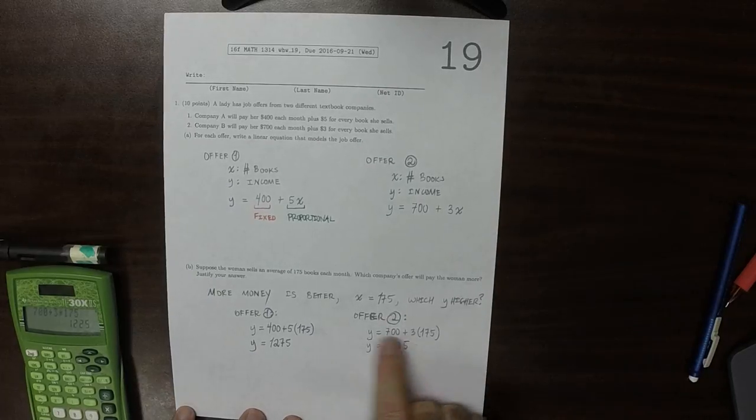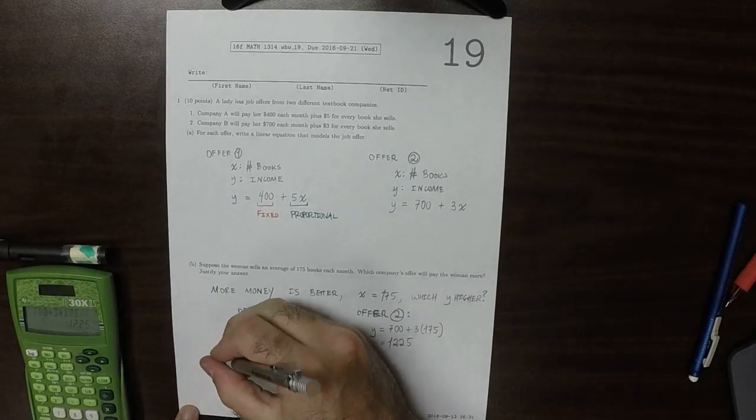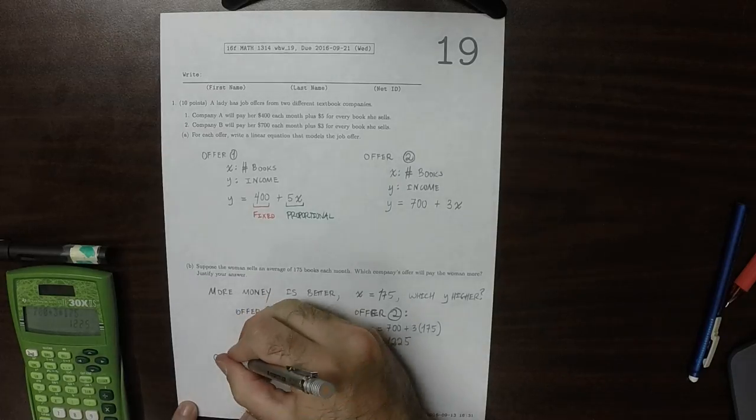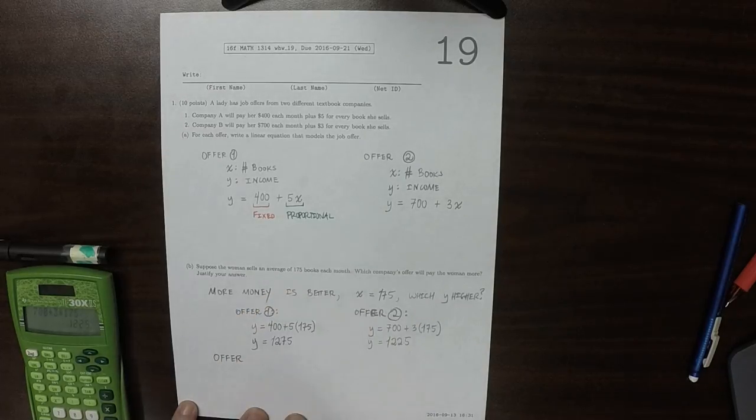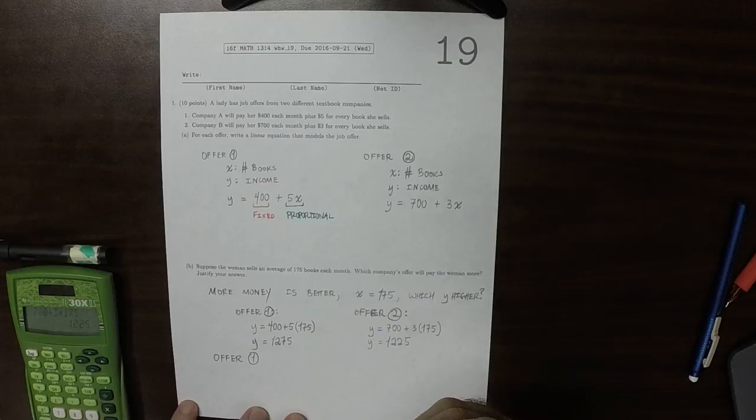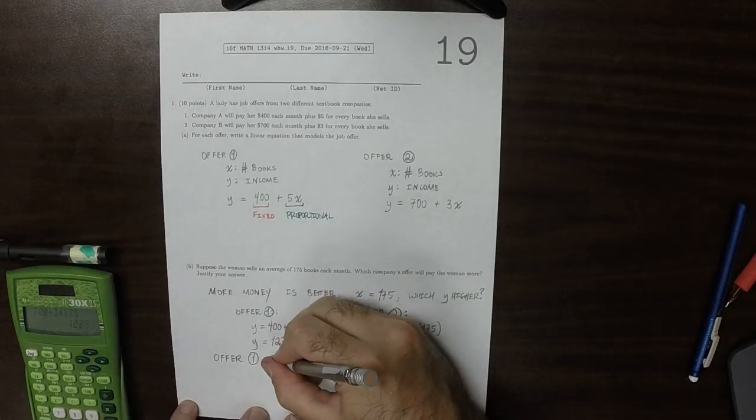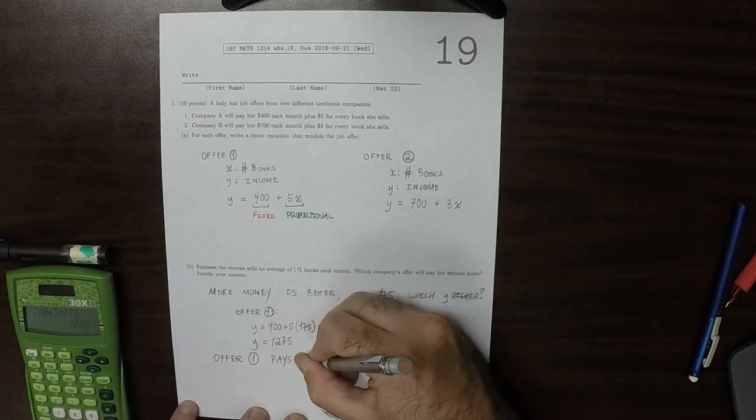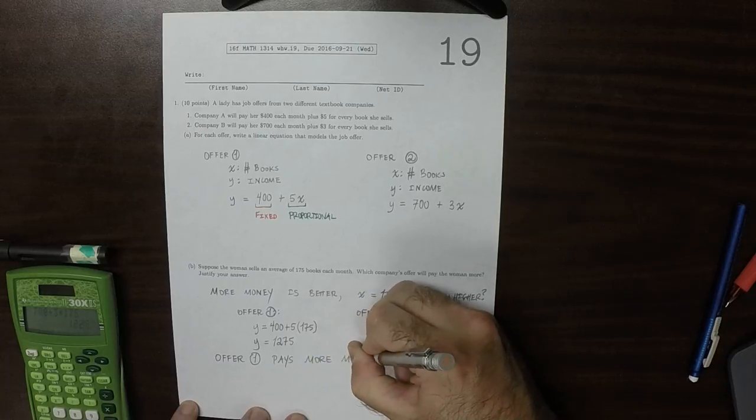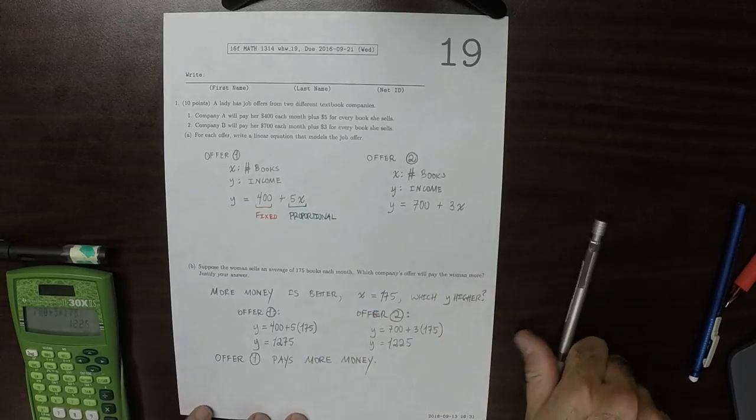However, which y is higher? This one is higher. So offer 1 pays more money. That's the answer.